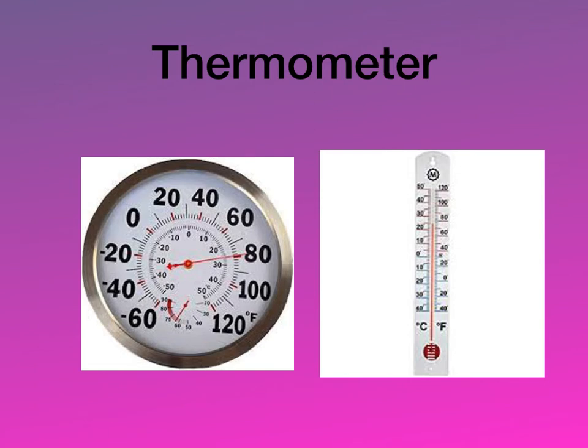This next weather tool is a thermometer. This is the easiest weather instrument to recognize because we have all seen an outdoor thermometer at some point. This is different than the thermometer that you would use to measure your own temperature — firstly it goes up to 120 degrees and our bodies don't get that hot, usually around 98 degrees, and they're shaped differently. An outdoor thermometer is used to measure the temperature outside.